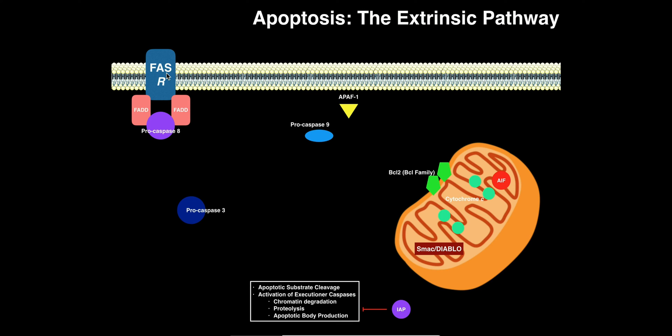The FAS receptor is a transmembrane protein. On its cytosolic side, there are proteins called FADDs — FAS-associated death domains — which associate with it. These FADDs bind an inactive zymogen referred to as pro-caspase-8. These pro-caspases are inactive enzymes that cannot induce cell death. Only once these pro-caspases become fully functional caspases can they execute the program for apoptosis.